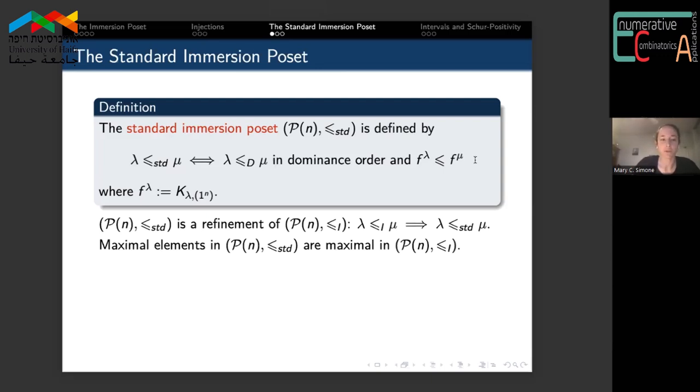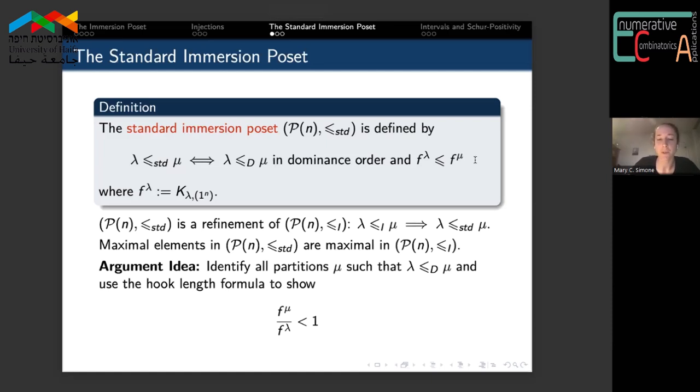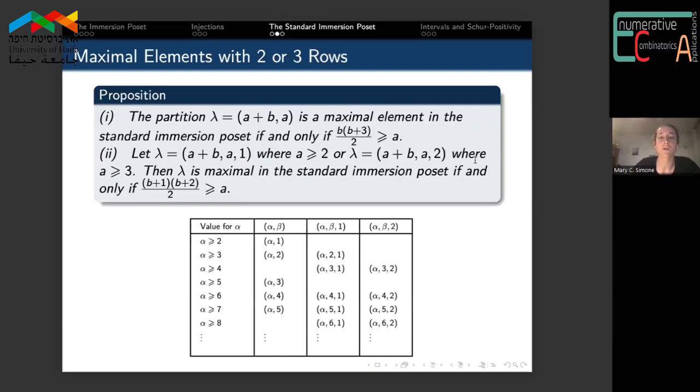We have this general framework for identifying if shape λ is maximal, which is to first identify all partitions μ which dominate λ, and then use the hook length formula in order to show that fμ is strictly less than fλ. We apply this framework to classify all maximal elements that have two rows or two-part partitions, and then certain cases of three-row partitions.